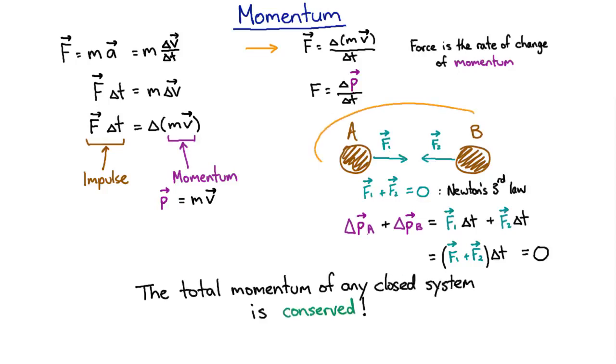So the total momentum of this system was conserved, and remember we didn't know anything about these two forces, why they were there, only that they obeyed Newton's third law. And all forces do obey Newton's third law. So no matter what A and B were, we knew that the momentum was conserved, and in fact that's true for any closed system.